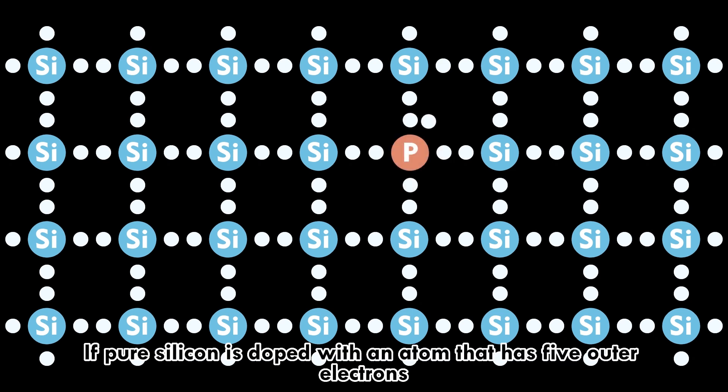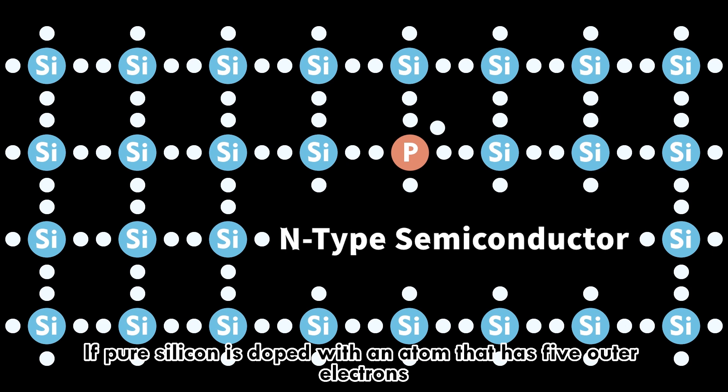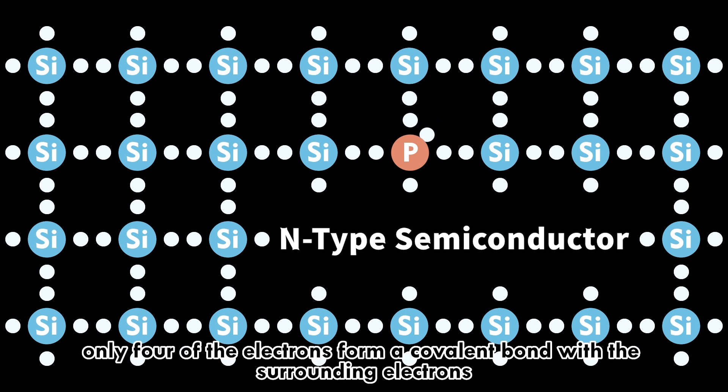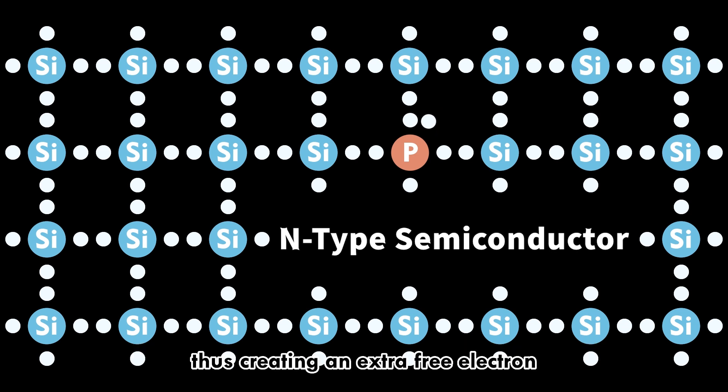If pure silicon is doped with an atom that has five outer electrons, such as phosphorus, only four of the electrons form a covalent bond with the surrounding atoms, thus creating an extra free electron. This is called an n-type semiconductor.